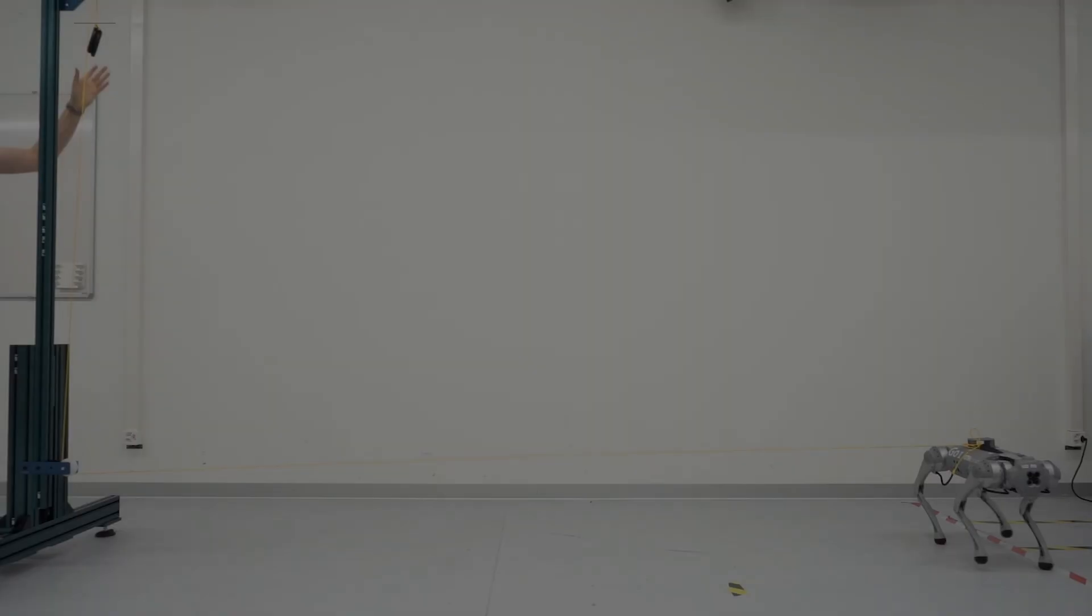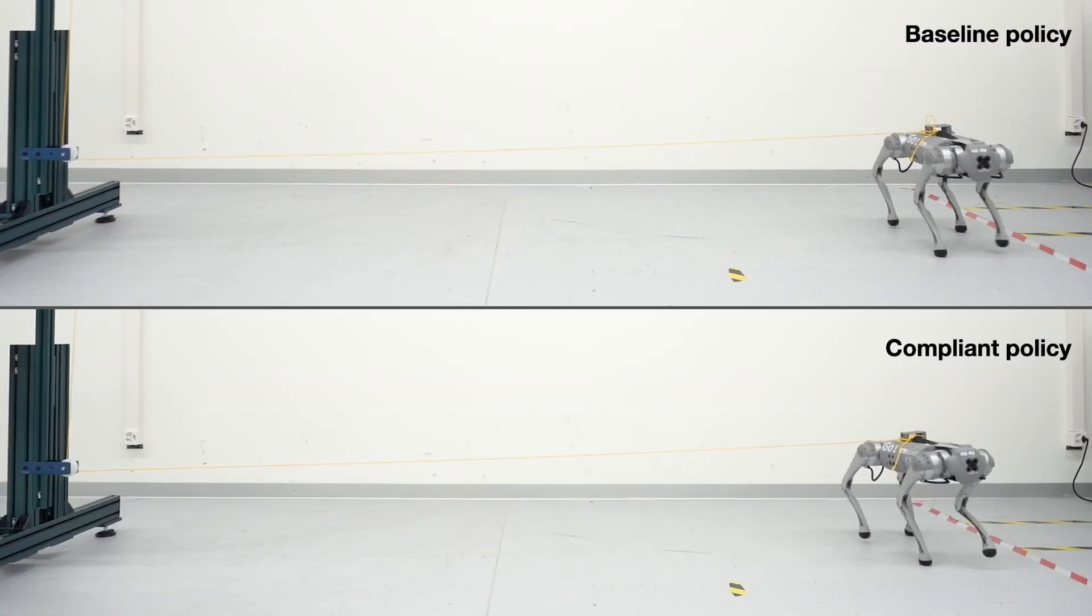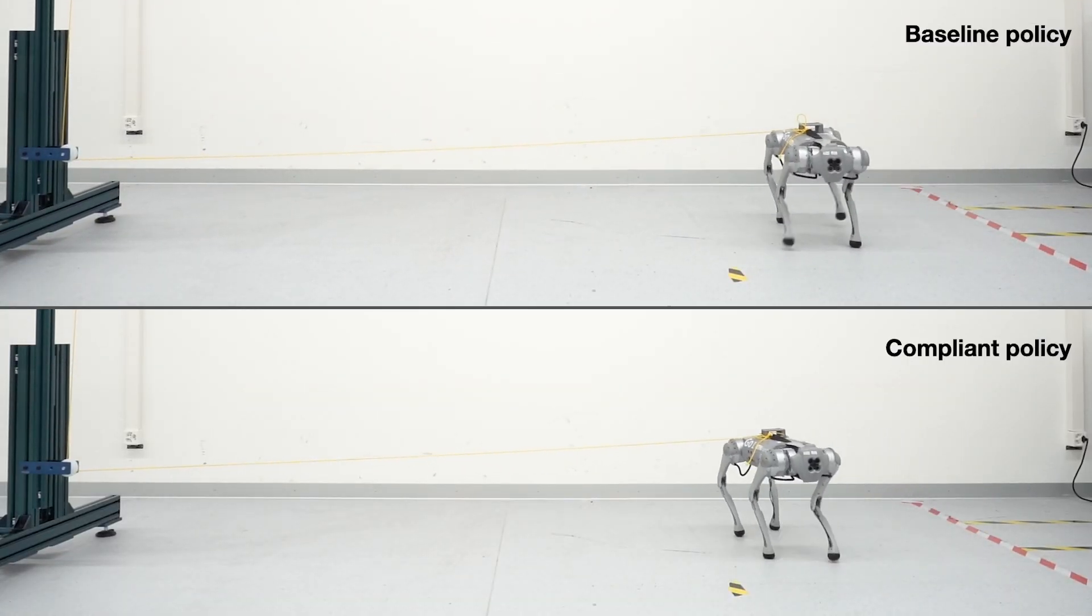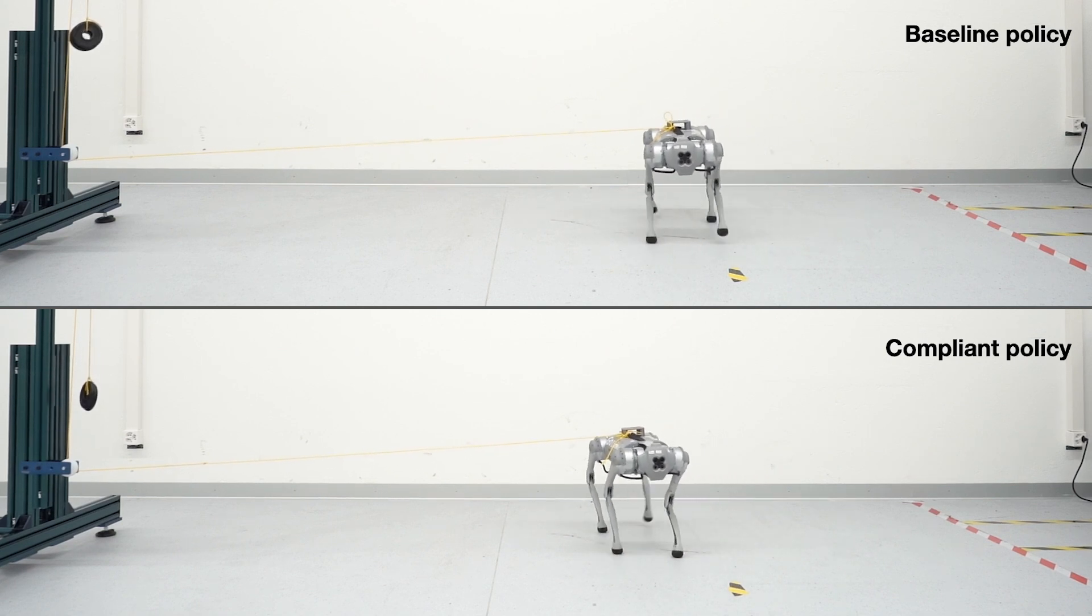We executed a set of pull and push tests in a controlled environment. Initially, we utilized a 1 kg weight linked to a pulley system to exert pulling forces on the robot. During the test, the robot under the compliant policy generally moved in the force's direction rather than opposing it.